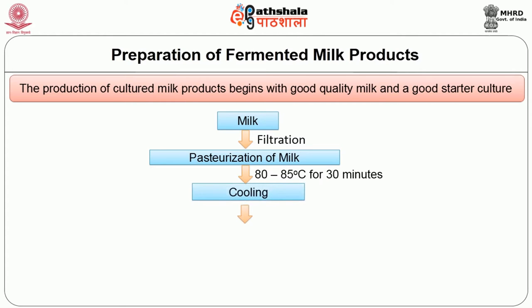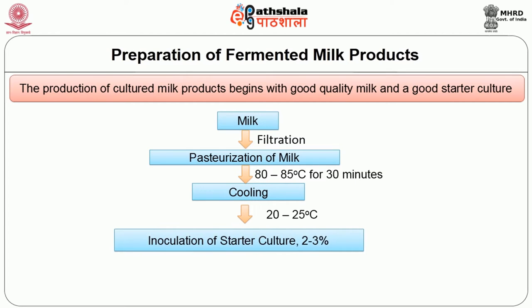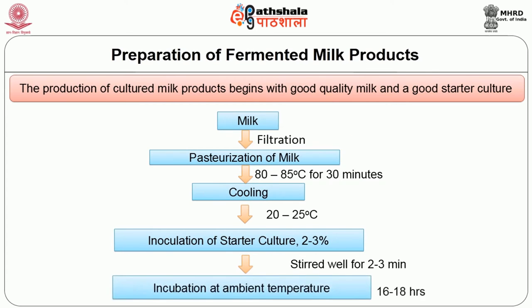Once pasteurization is complete, the milk should be cooled to 20 to 25 degrees Centigrade either in a cold water basin or trough. The milk is then inoculated with 2 to 3% active starter culture and stirred well for 3 to 5 minutes to ensure uniform distribution. The milk is finally incubated at ambient room temperature overnight for 16 to 18 hours. Care should be taken for intact coagulation by cooling the coagulants before stirring or breaking the curd, which improves viscosity and consistency of the product.